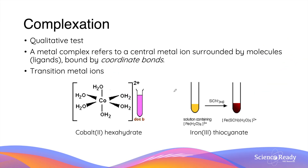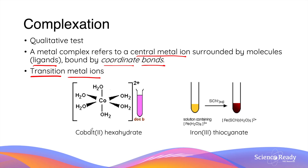The second qualitative test is complexation, and this test only works for transition metal ions. A metal complex refers to a central metal ion — a transition metal — being surrounded by molecules called ligands. These ligands are bound to the metal ion via coordinate bonds. The reason this test is qualitative is because the formation of these metal complexes gives off a very characteristic color.